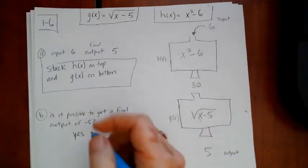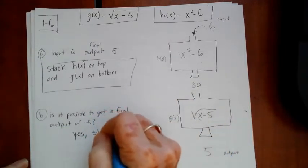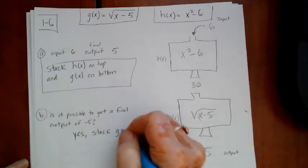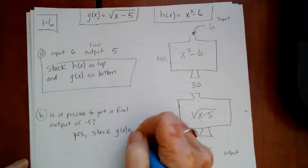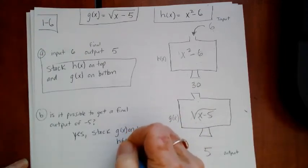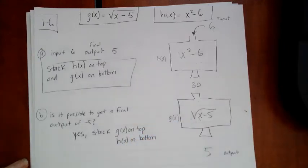And if you want to say yes. And if you want to, well, we should probably write y. And then we'll just say stack g of x on top, h of x on bottom. And that's it.